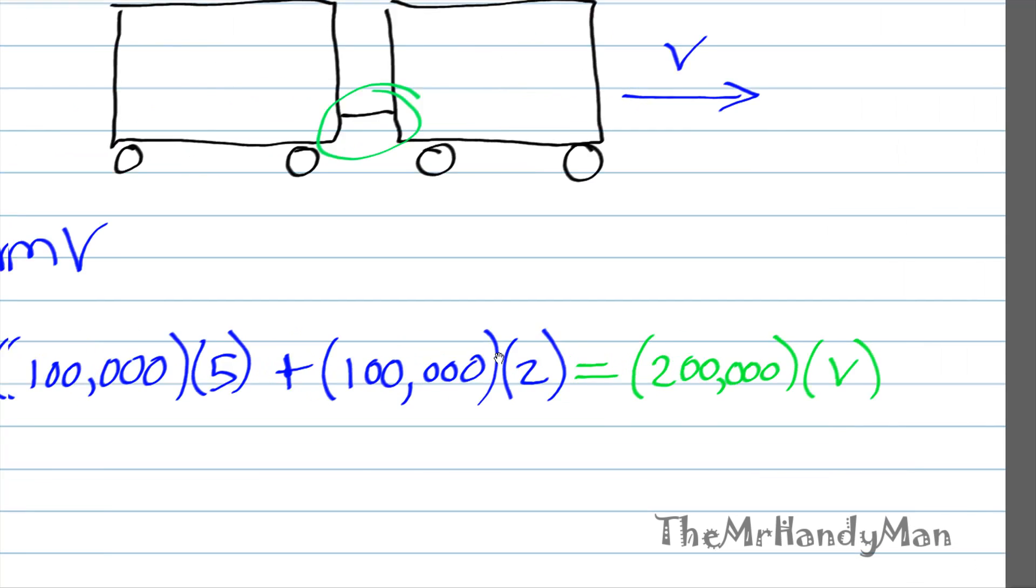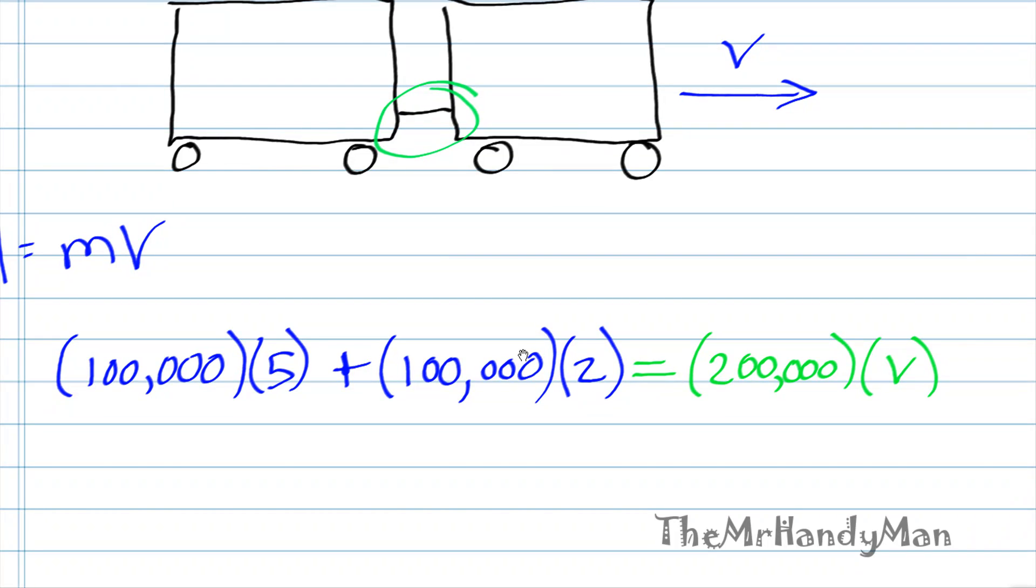Well, it's a relatively simple equation. 100,000 times 5 plus 100,000 times 2 equals 200,000 times V. If we were to evaluate this whole left side and divide it by the 200,000, I'm going to let you do all the algebra.